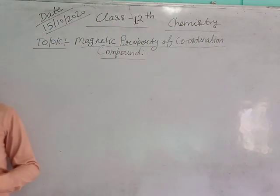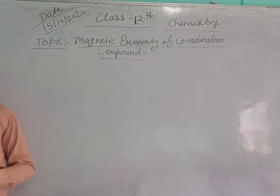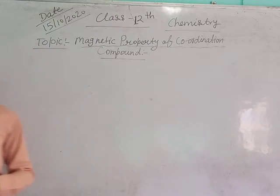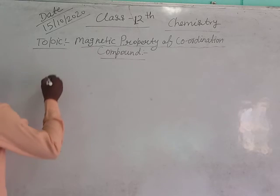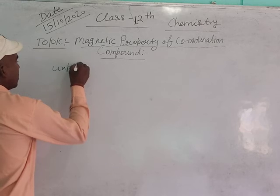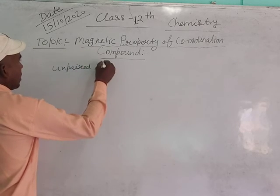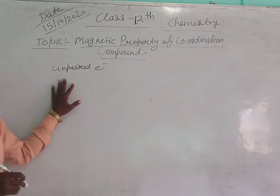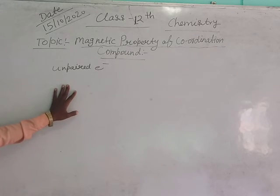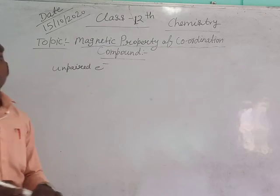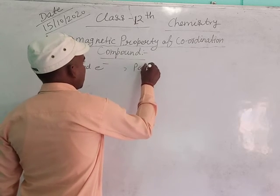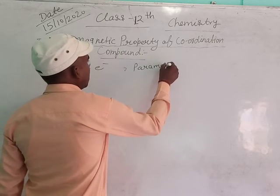Coordination compounds have unpaired electrons. So the magnetic property of coordination compounds — because of unpaired electrons — is paramagnetic.